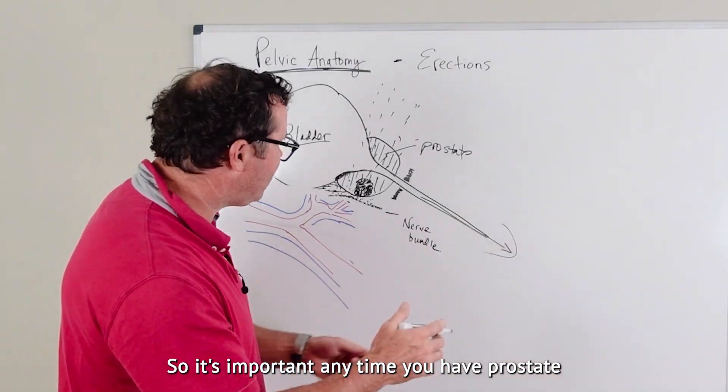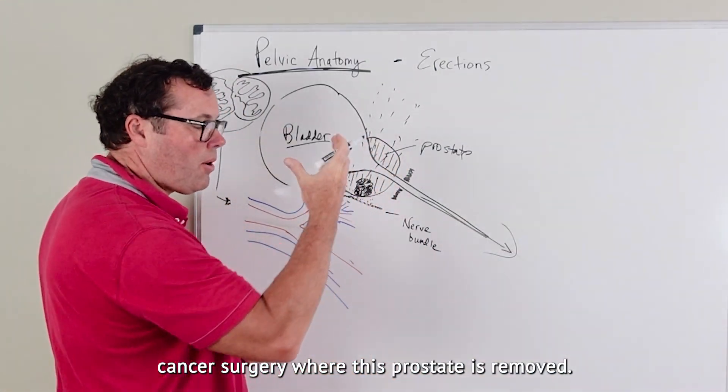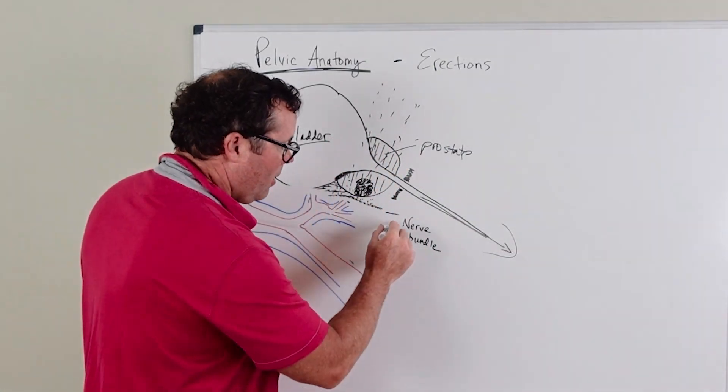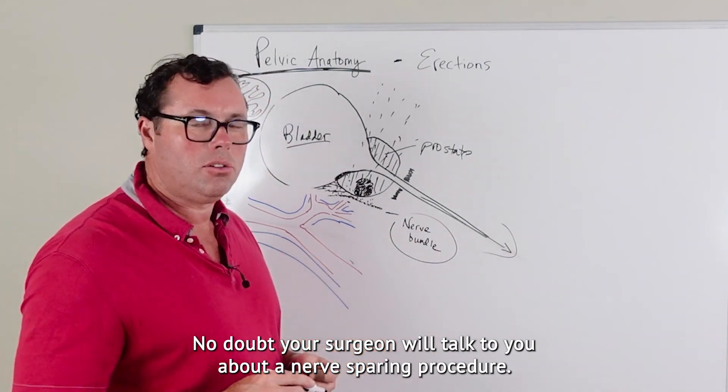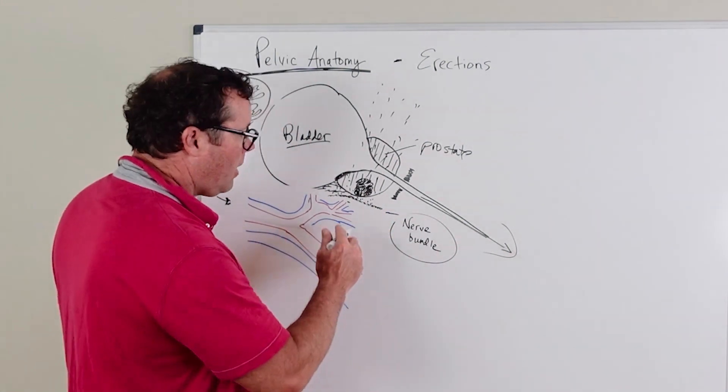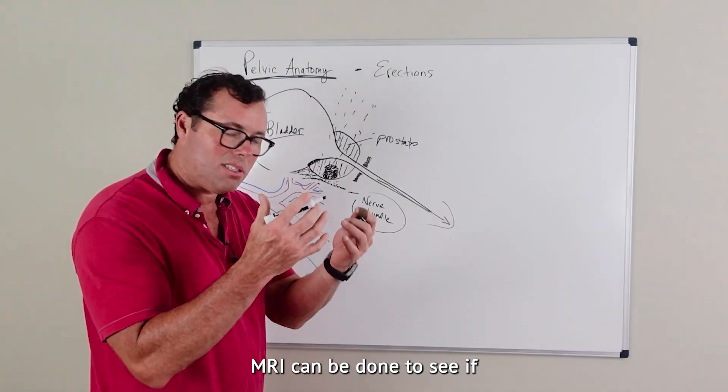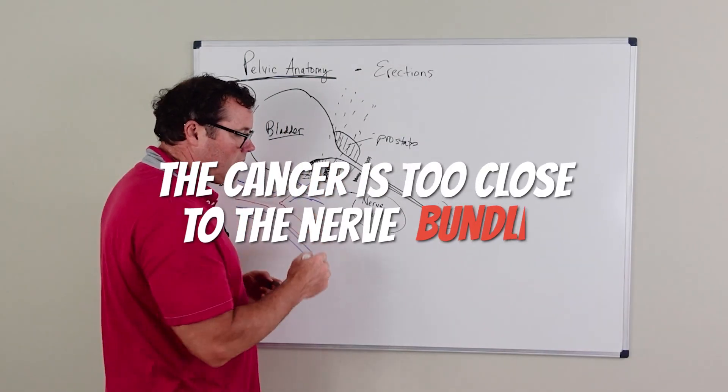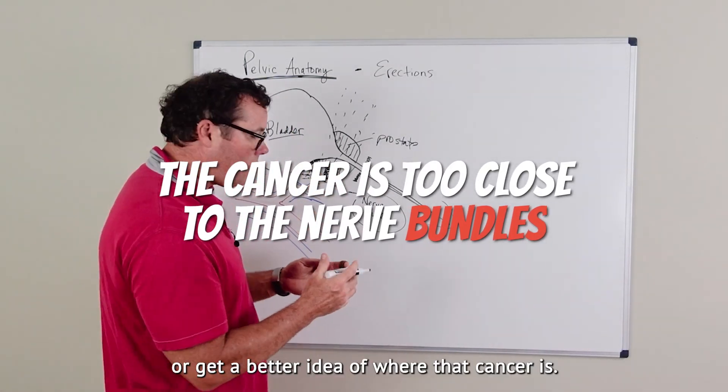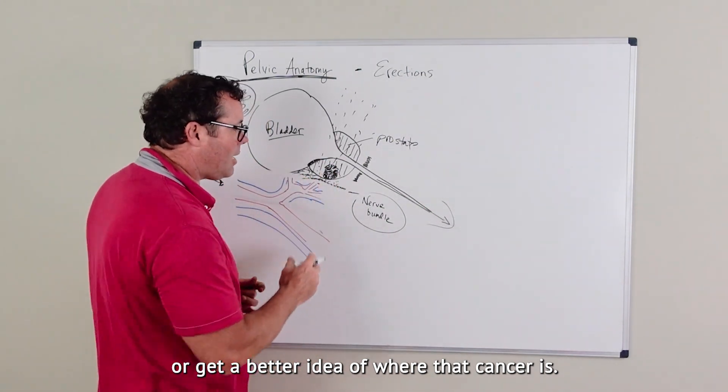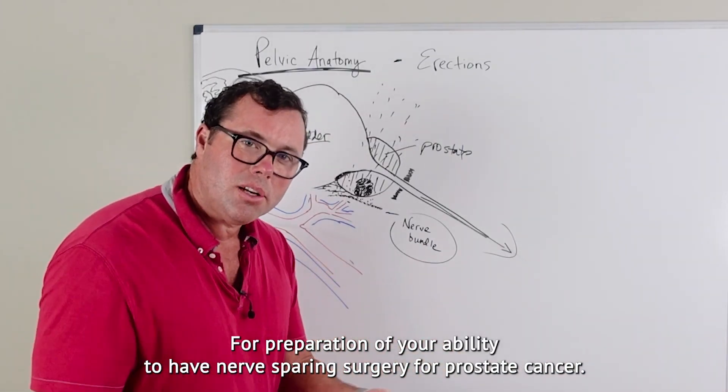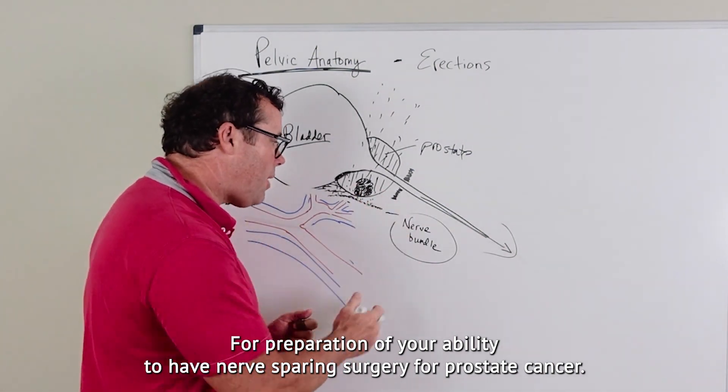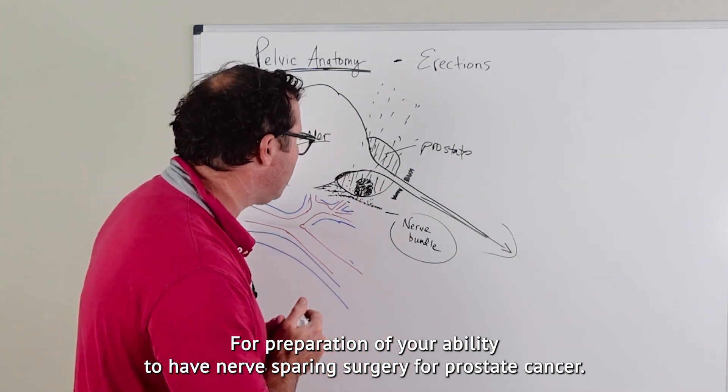Anytime you have prostate cancer surgery where this prostate is removed, no doubt your surgeon will talk to you about a nerve sparing procedure. MRI can be done to see if the cancer is too close to the nerve bundles or get a better idea of where that cancer is for preparation of your ability to have nerve sparing surgery for prostate cancer.